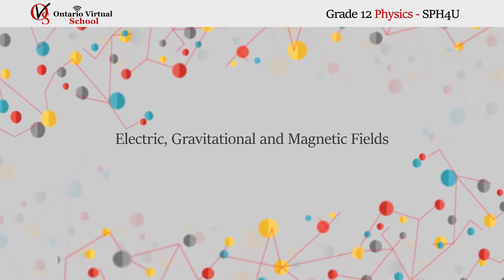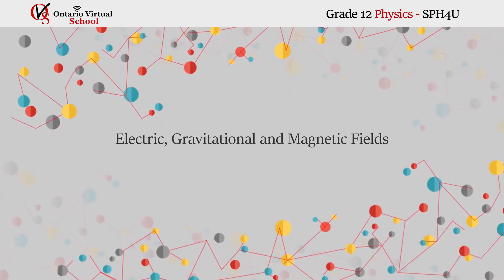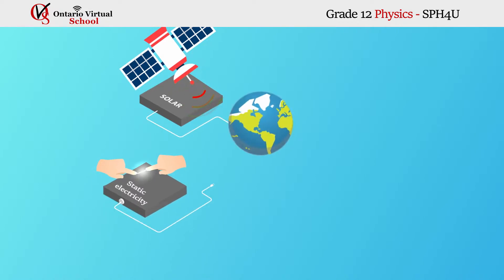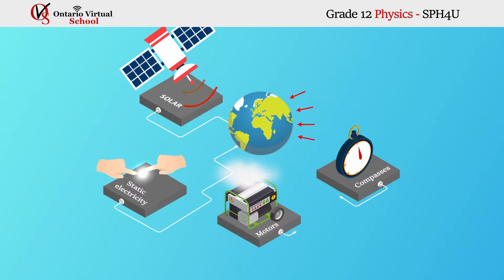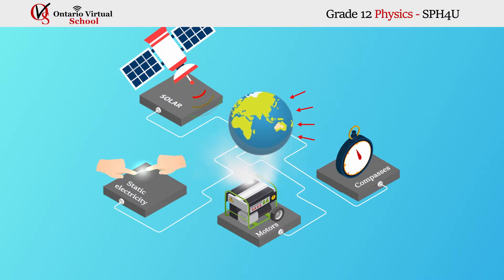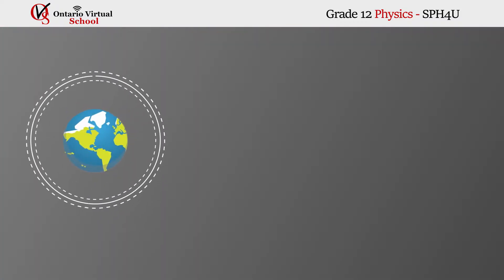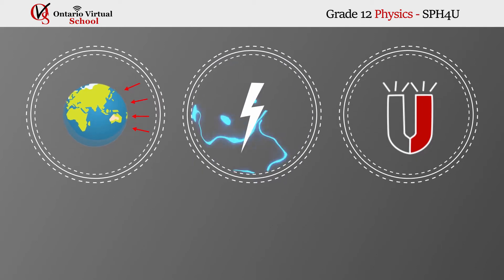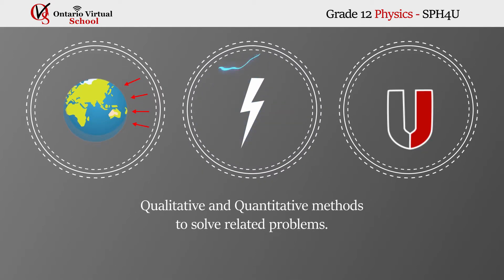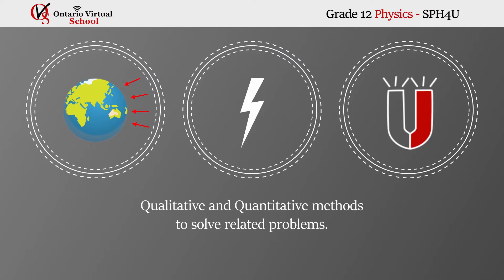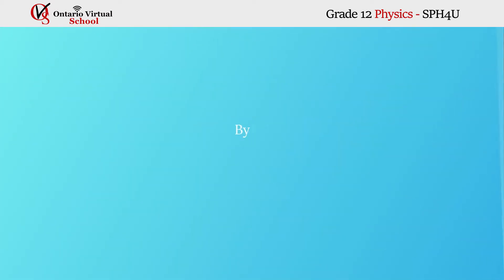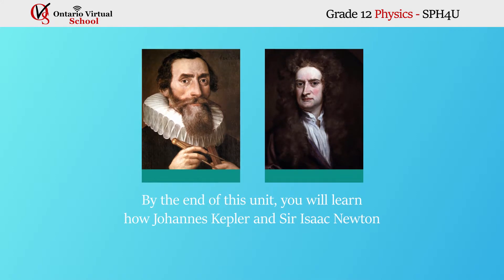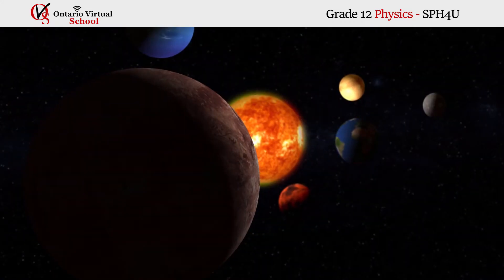Electric, gravitational, and magnetic fields: the solar system, static electricity, lightning, compasses, and motors all involve fields. In this unit we will investigate gravitational, electric, and magnetic fields using both qualitative and quantitative methods to solve related problems. By the end of this unit you will learn how Johannes Kepler and Sir Isaac Newton helped us understand the movement of planets around the Sun.